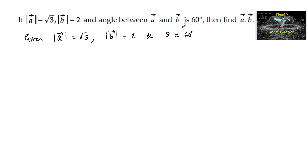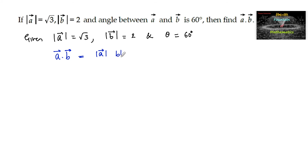To find A dot B, since we know that the dot product of two vectors A dot B is equal to mod A into mod B into cos of the angle between them, that is cos theta.